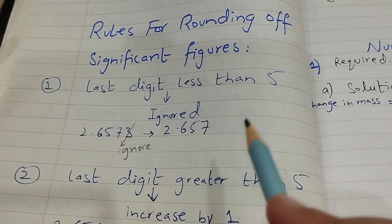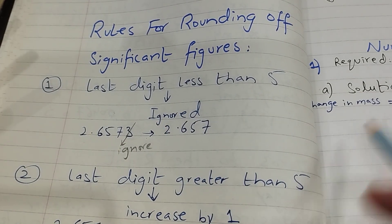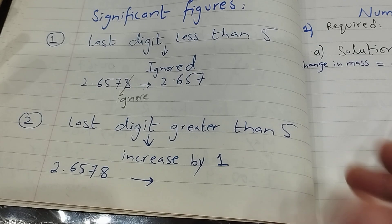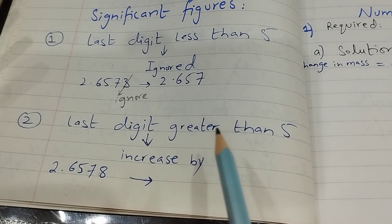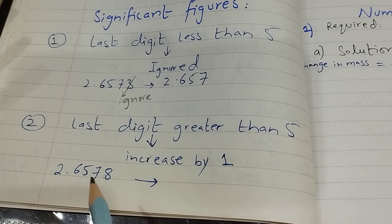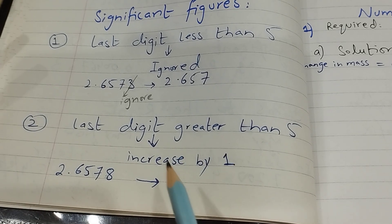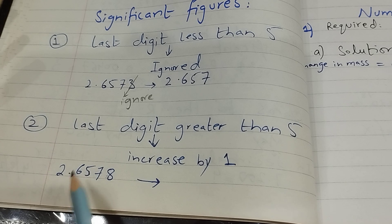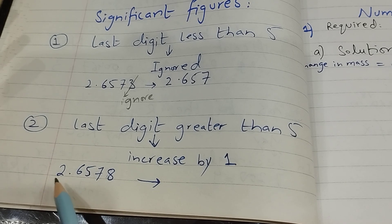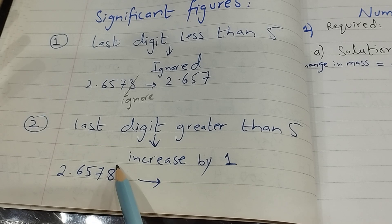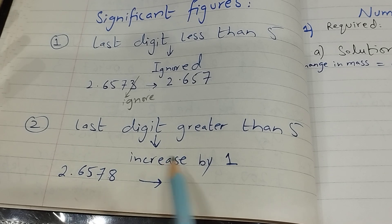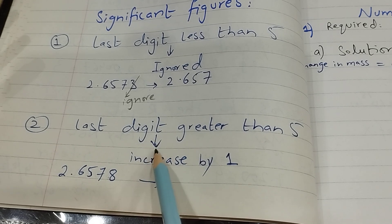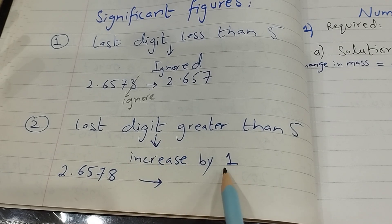So this is your first rule. Rule number two: if last digit is greater than five — अगर अब आपके पास कोई significant figure है और उसका last digit five से greater है। Let us take this example: 2.6578. यहाँ पर last digit eight है, this is greater than five, तो इसके लिए मैंने लिखा है — increase by one.